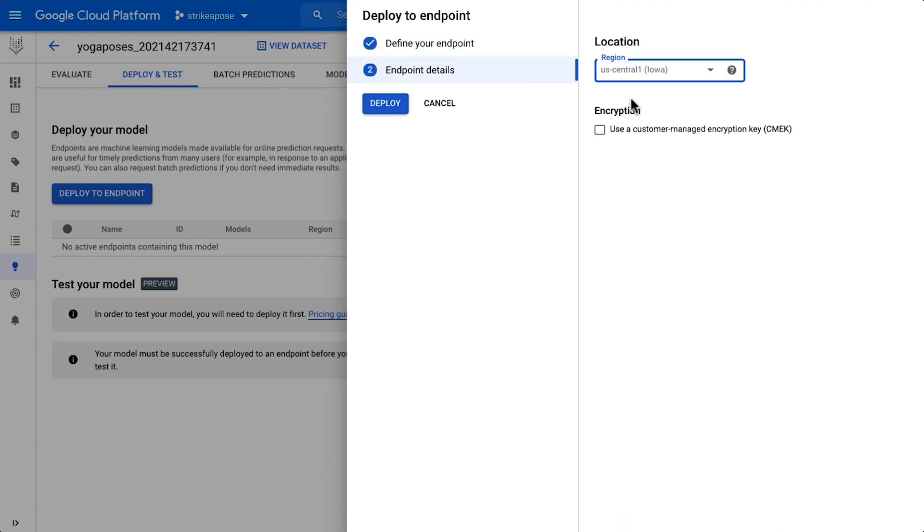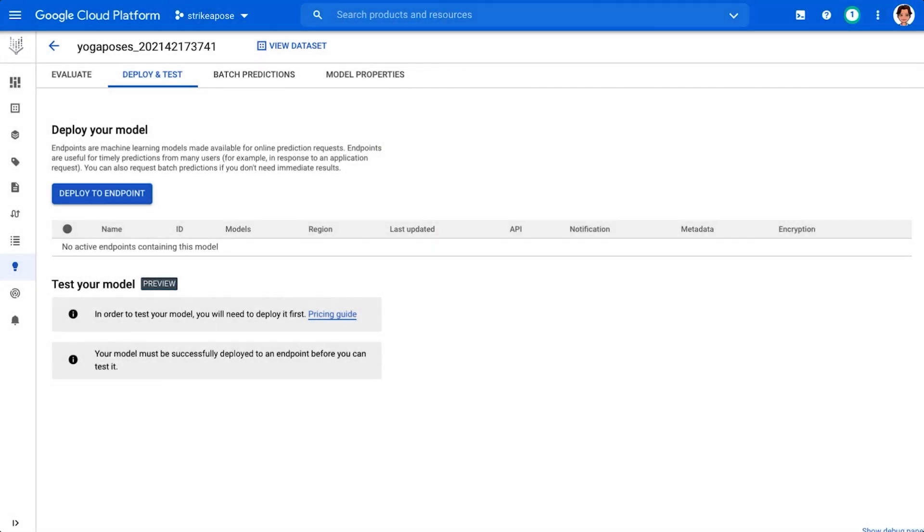Depending on where your users are, select the region to deploy your endpoint. And that's it. Hit Deploy, and we have an endpoint.